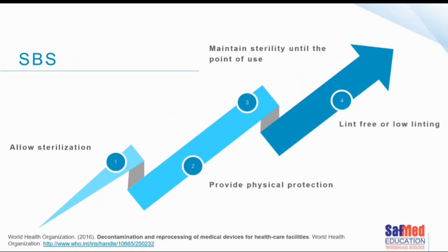Sterile barrier systems need to do several things. Number one, it needs to allow for sterilization — meaning we need to be able to get the air out of a package and get the sterilant to penetrate and do its job. It needs to provide some form of physical protection, maintain sterility until the point of use, and the packaging needs to be lint free or at the very least low linting.